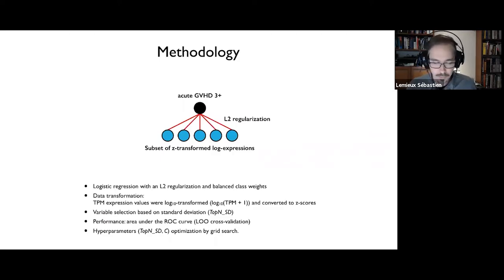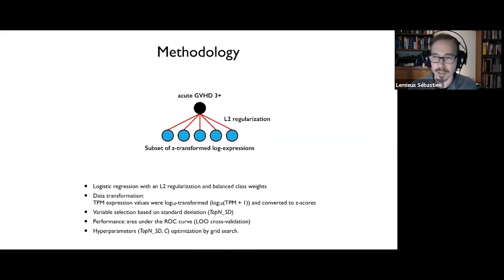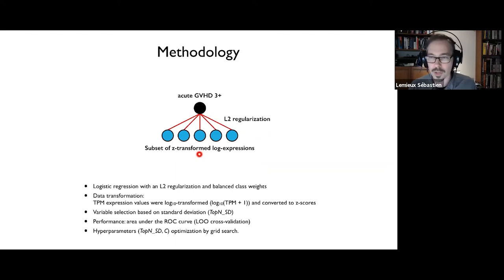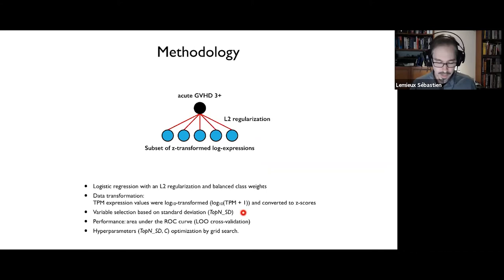The methodology we put together to solve this problem started with really simple methods — essentially a logistic regression, or for the ML enthusiast, a neural network with no hidden layer. One particular detail: we were adding L2 regularization to the logistic regression and using Z-transform log expression of the genes. Because there are definitely too many covariates, we had to do a selection. We decided to select based on standard deviation, picking the top genes with the highest standard deviation throughout the cohort, and also varying the level of regularization.